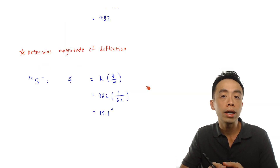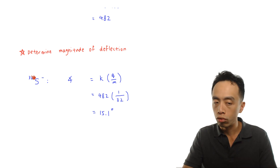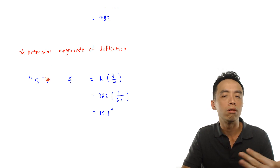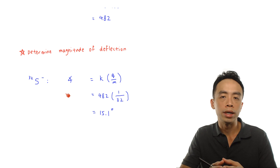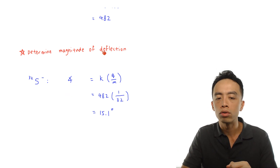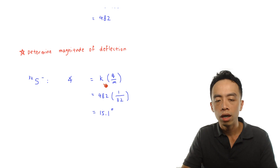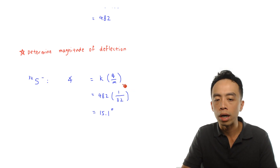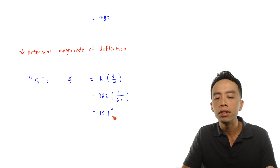Once we have K, we apply it to solve for the angle of deflection for sulfur. The mass number for sulfur is 32, and its charge is minus 1. Again, we use the magnitude of the charge. So the angle of deflection equals 482 times (1 over 32), which gives us 15.1 degrees.